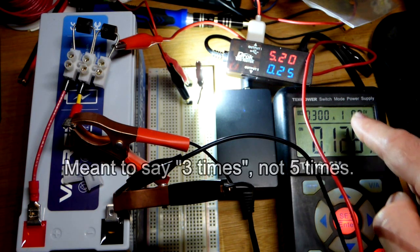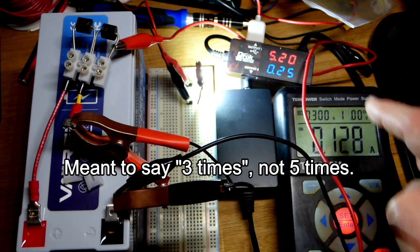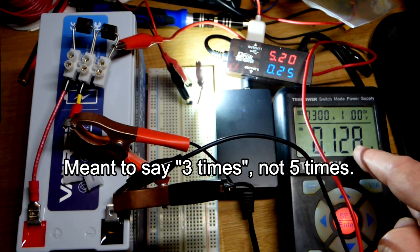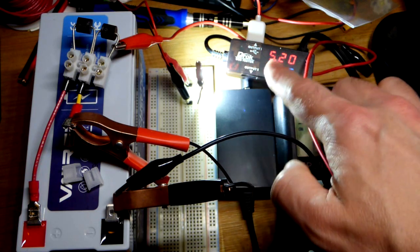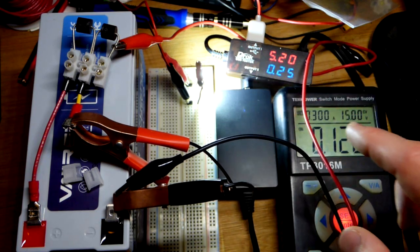It should be closer to a third because it's five times as much voltage, so it should be a third of the current at the input versus the output. But it looks like about halfway. We do have to power this, it has some power loss.